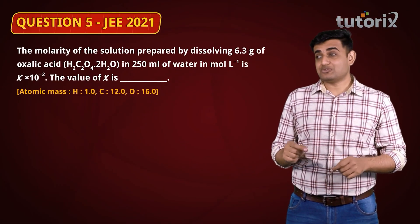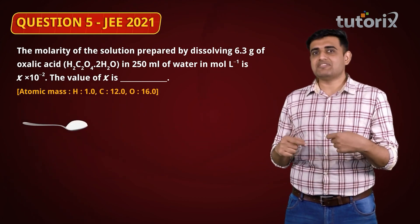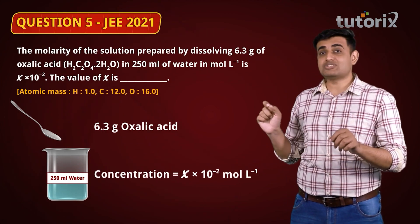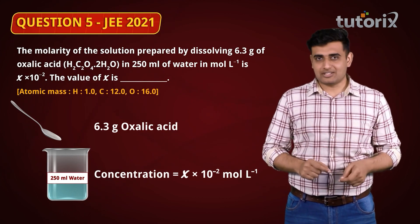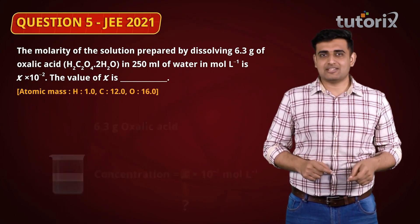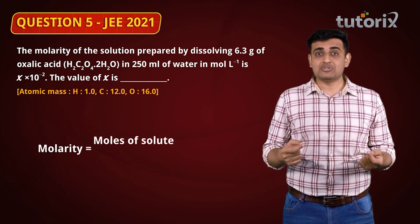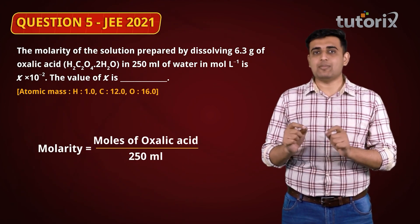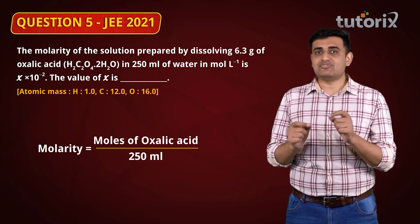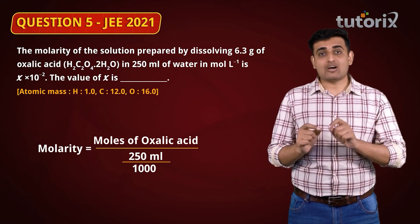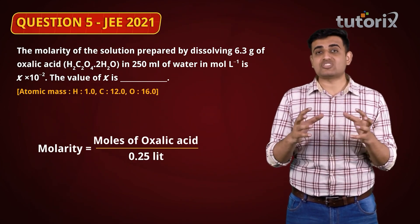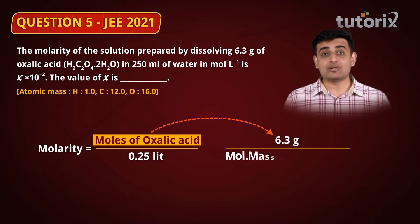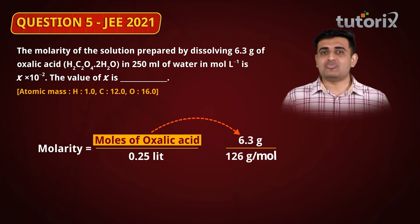The next question is also on molarity: 6.3 grams of oxalic acid is dissolved in 250 mL of water, and the concentration is x × 10⁻² moles per litre. We have to find x. Molarity = moles of solute / volume of solution. The volume is 250 mL, which we convert to 0.250 litres. The moles of oxalic acid = mass / molecular mass = 6.3 / 126 grams per mole.